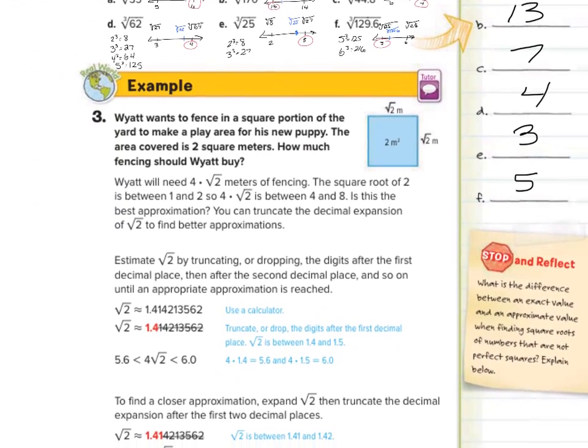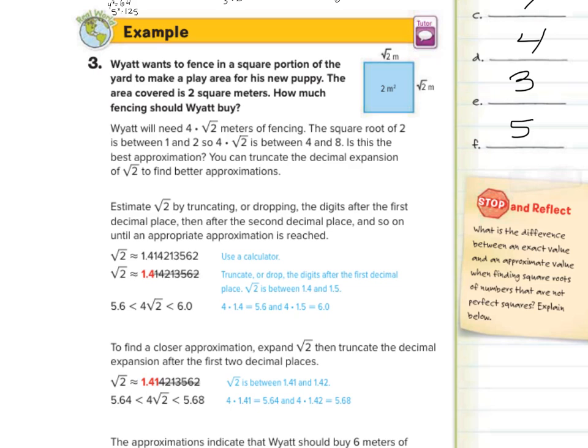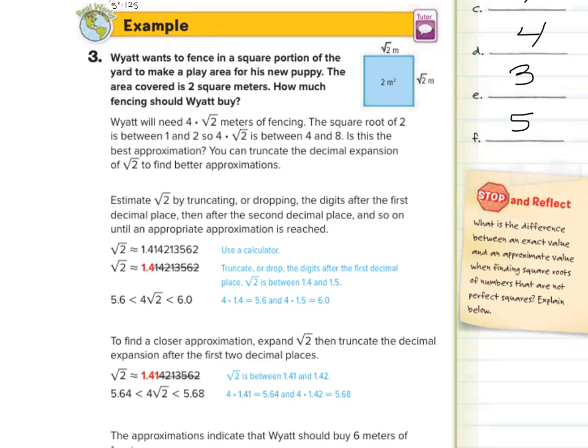Now if we look at the next guided example, Wyatt wants to fence in a square portion of the yard to make a play area for his new puppy. The area covered is 2 square meters. How much fencing should he buy? Well, we're looking at perimeter. And so he needs 4 times the square root of 2 meters of fencing. The square root of 2 is between 1 and 2. So 4 times the square root of 2 is going to be between 4 times 1 is 4, 4 times 2 is 8. So it's going to be somewhere between 4 and 8. Now is this the best approximation? It says you can truncate the decimal expansion of the square root of 2 to find better approximations. So estimate the square root of 2 by truncating or dropping the digits after the first decimal place, then after the second decimal place, and so on, until an appropriate approximation is reached.